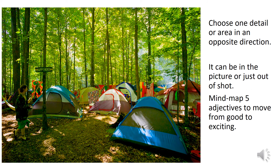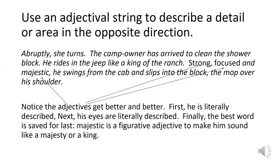So this is what you're going to work on in a moment. You're going to choose one area or one detail in a completely different, opposite direction from the one you've chosen. We've said it doesn't have to be in the picture, but it could be something fitting just out of shot — something typical for a campsite. It doesn't have to be the present; you can do a flashback into the past if you want to. Use an adjectival string to describe a detail or one area in the opposite direction. This is your change paragraph.